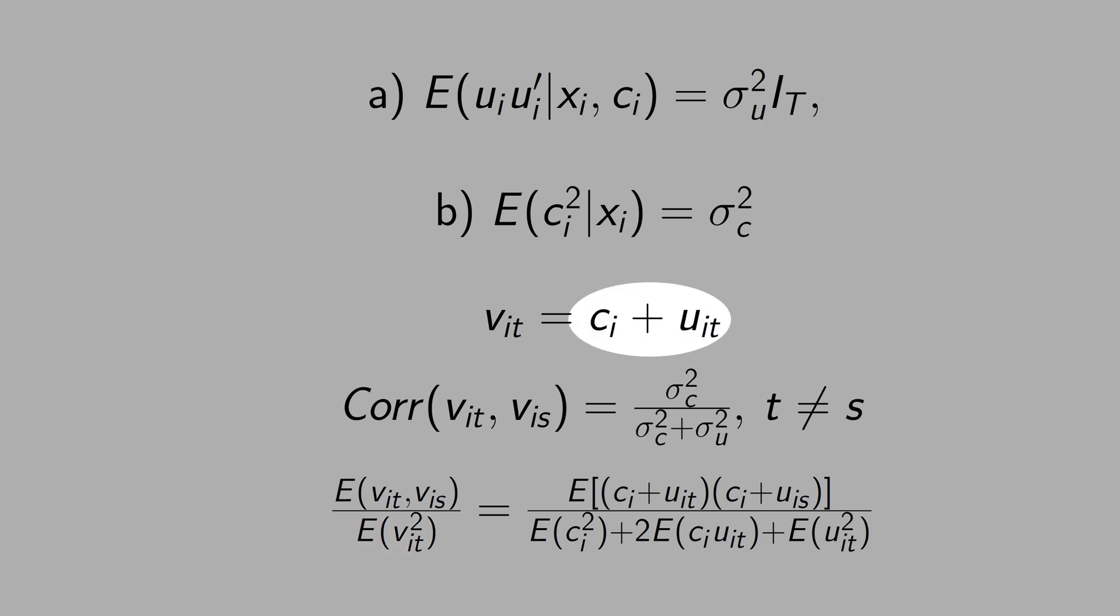We know that this is ViT. If we square this, we get here the denominator. And this term in the middle, it vanishes because we assume that C is independent of U. This first term here is the variance of U that you see here.